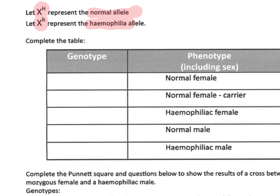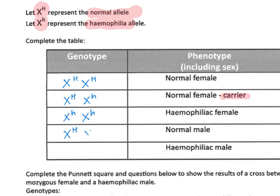We all have the normal allele, written as X with a capital H. There is also a recessive allele which gives haemophilia, written as X with a small h. Take a few seconds to fill in the genotype table — this time it includes the term 'carrier' — then we'll check your answers together.